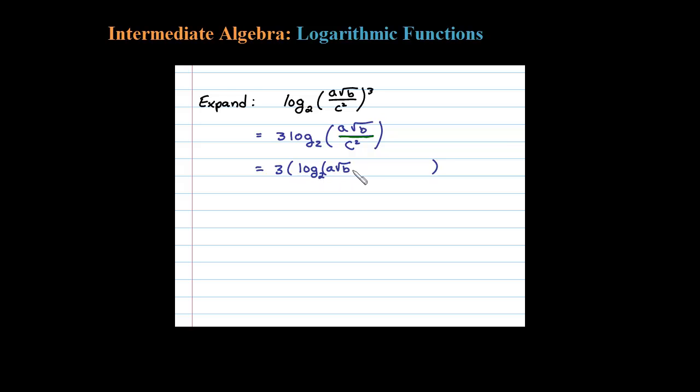Now inside here we have multiplication, so we can certainly expand that 3 times. Let's be a little careful here. When I expand that, I have log base 2 of a plus log base 2 of the square root of b, and then here's a minus log base 2 of c squared.